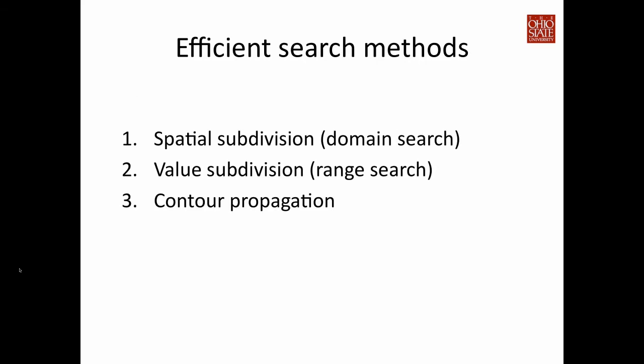There are many algorithms proposed by researchers for efficient search of isosurface cells. Today I'm going to give you an overview of these methods. Basically we can divide the methods into three categories. One is spatial subdivision — you divide the domain into small subdomains and check whether each subdomain is intersected by the isosurface. The second type divides the entire value range into sub-ranges, and you only check the cells that fall into the range containing the iso value. The third method is to perform contour propagation.